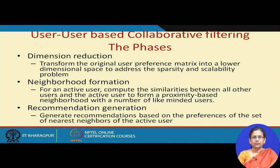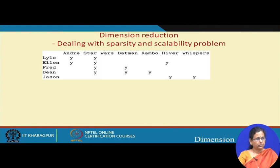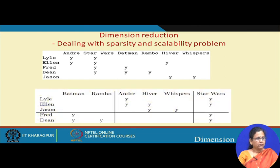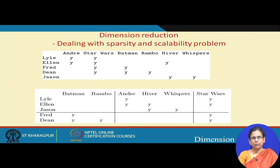The second task is for each user to find out who the similar users are — forming the neighborhood of each active user. Once we find out the neighborhood of like-minded users, we generate the recommendation. For dimensionality reduction, singular value decomposition or PCA can be used. Here we are giving a rudimentary example of what we mean by dimensionality reduction.